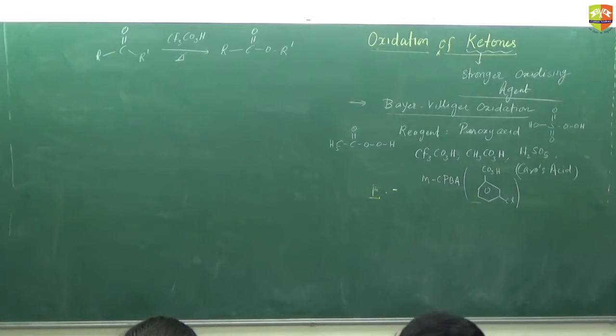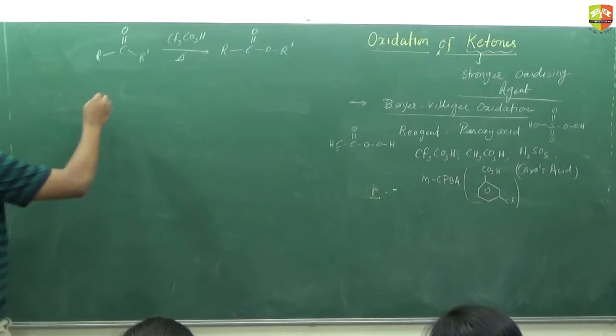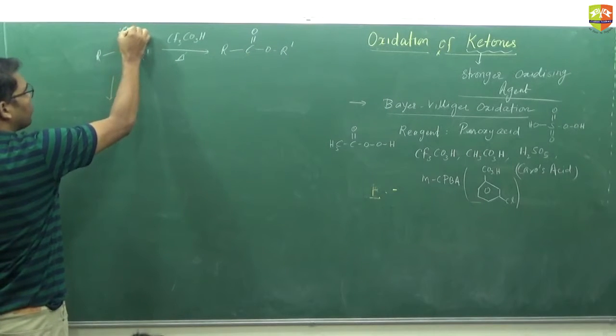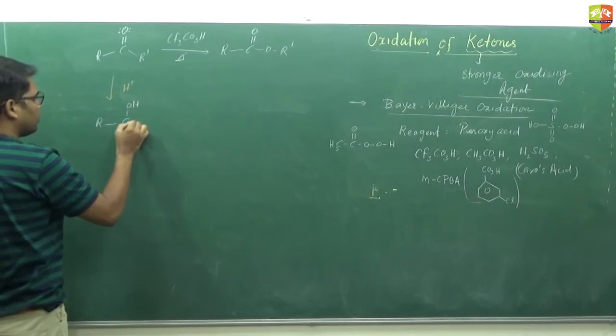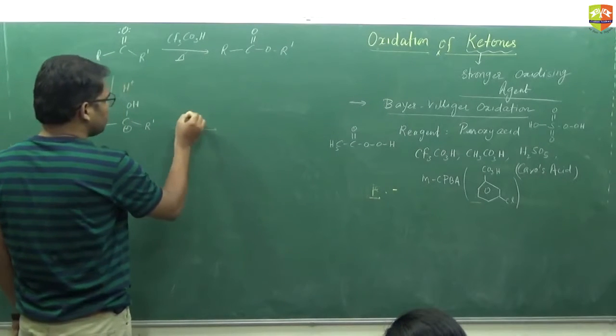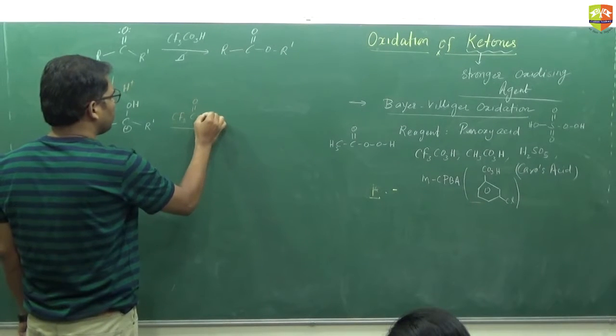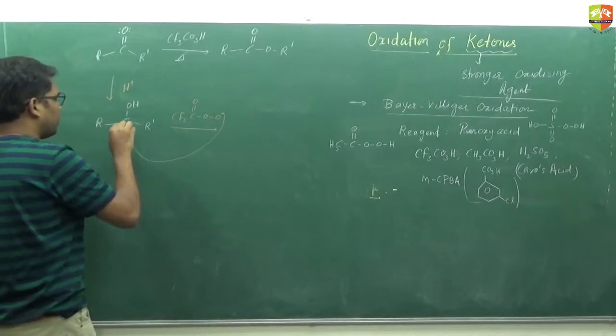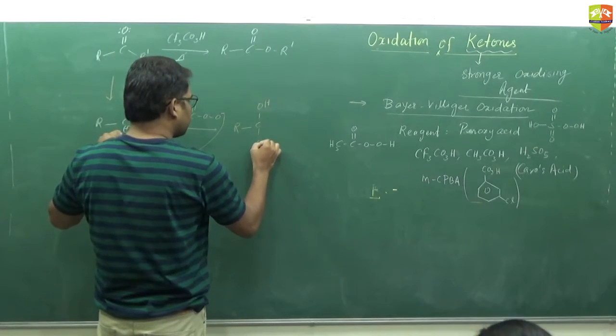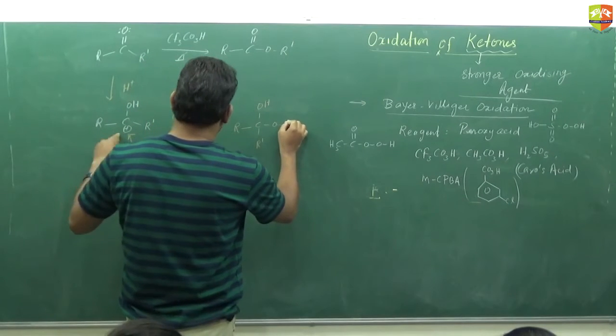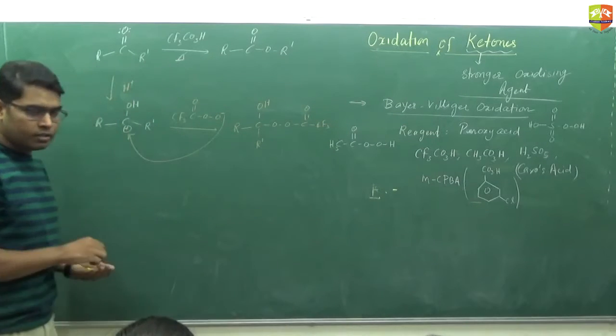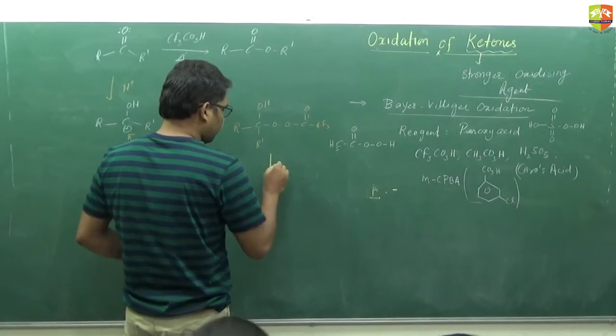H+ - we call for balance. Acid has to be called H+. This H+ will take this electron pair and we get RCOH+ R'. In the next step, CF3-C double bond O-OO- behaves as a nucleophile and attacks on this carbon. It forms RCOH-R'-OO-C double bond O-CF3.